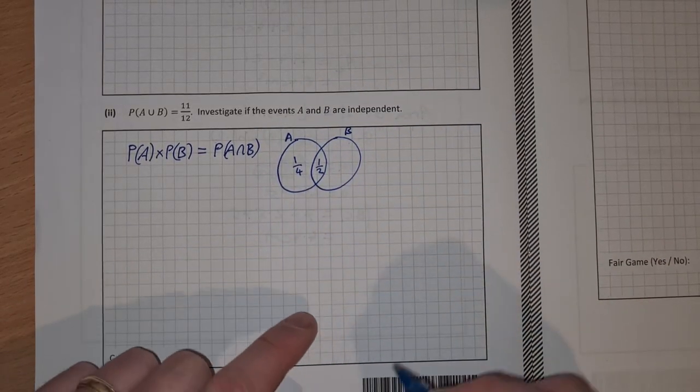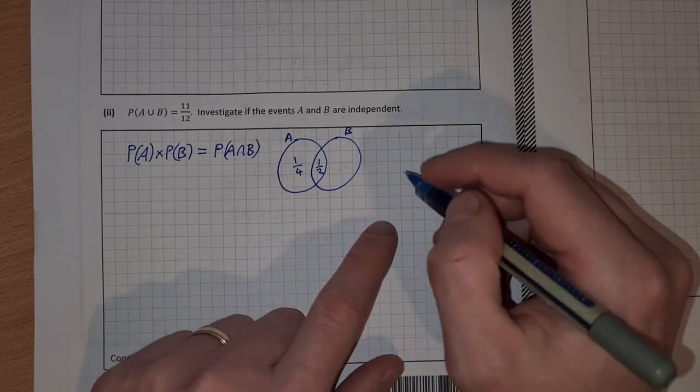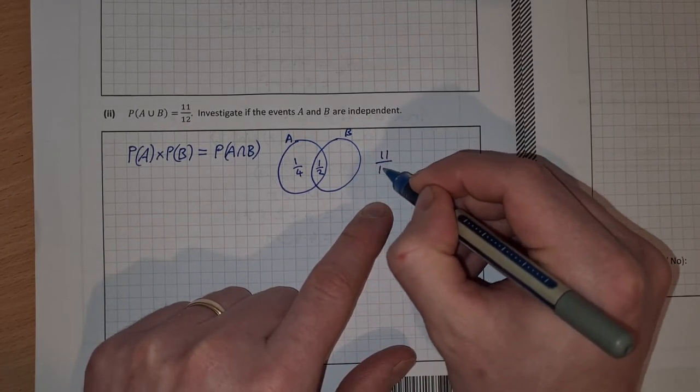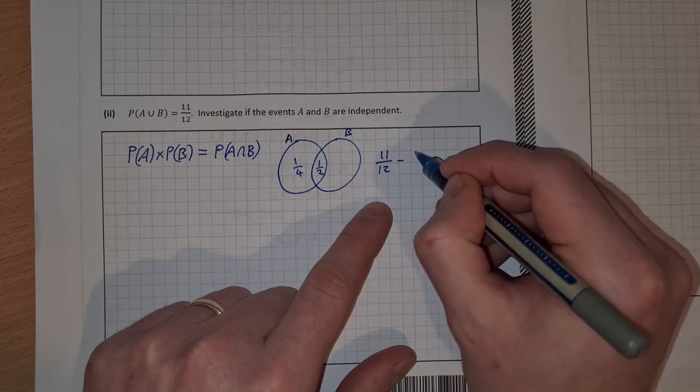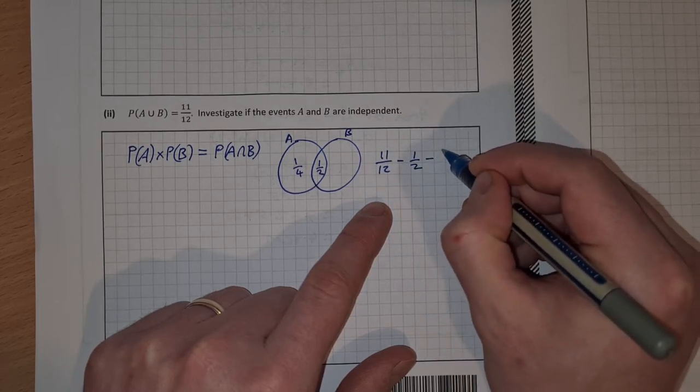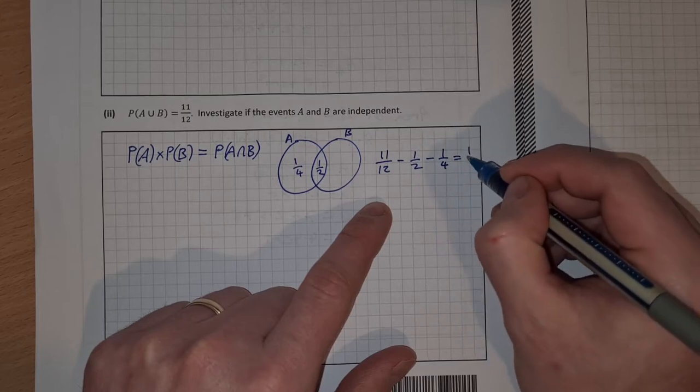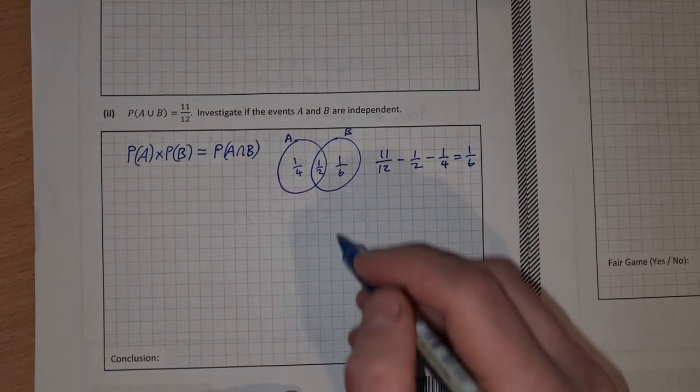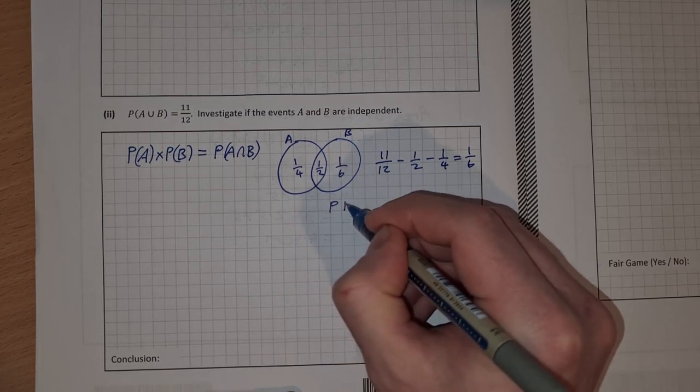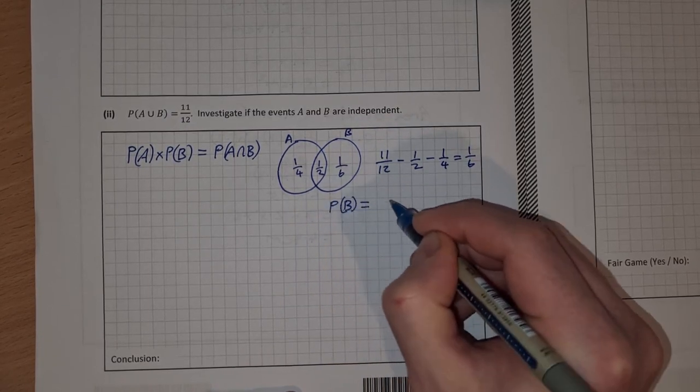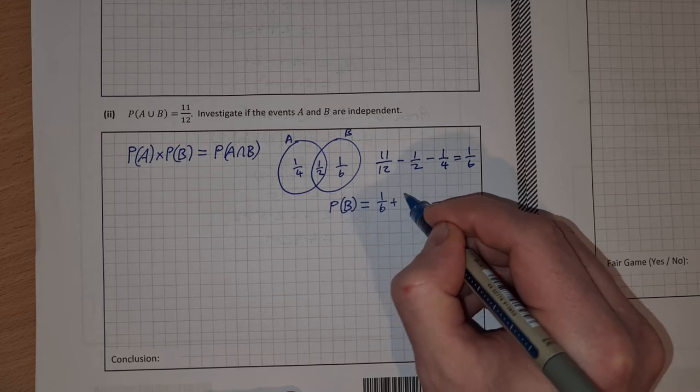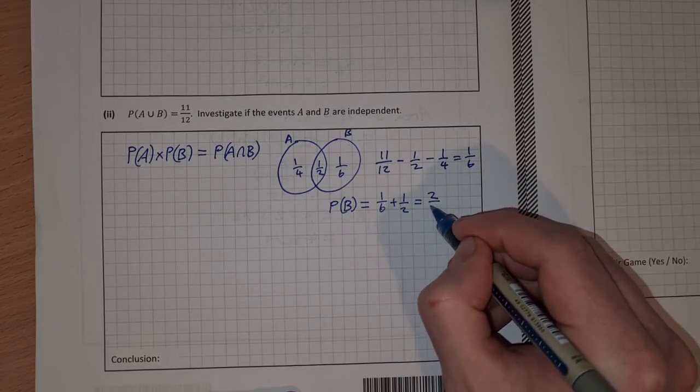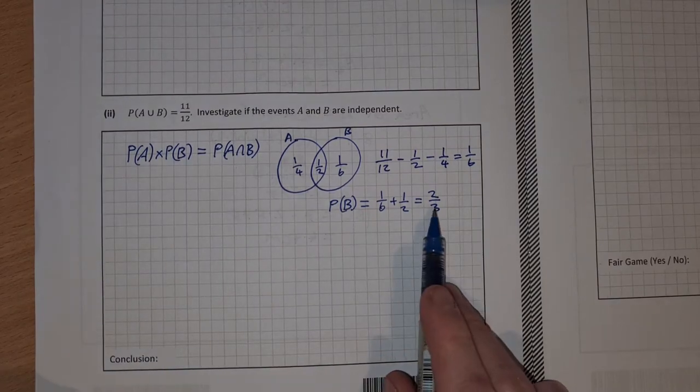And in total the union is 11 over 12. So to get the rest of B here it will be 11 over 12 minus a half minus a quarter which is equal to a sixth. So that means we have one sixth in here. So the probability of B is equal to one sixth plus one half which is equal to two thirds. So that's the probability of B.